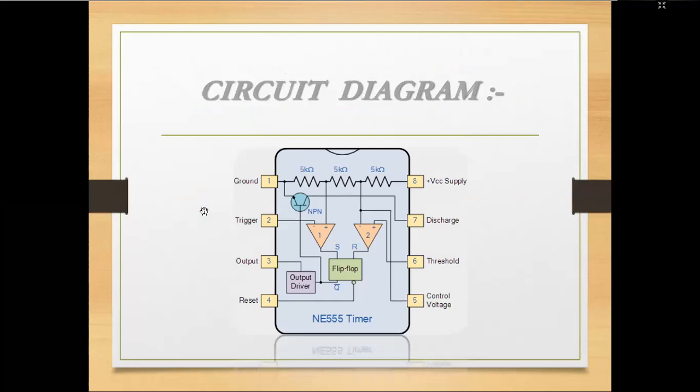This is the internal circuit diagram of the 555 timer, showing the RS flip-flop output, NPN transistor, and three resistors interconnected from pin 1 to pin 8.